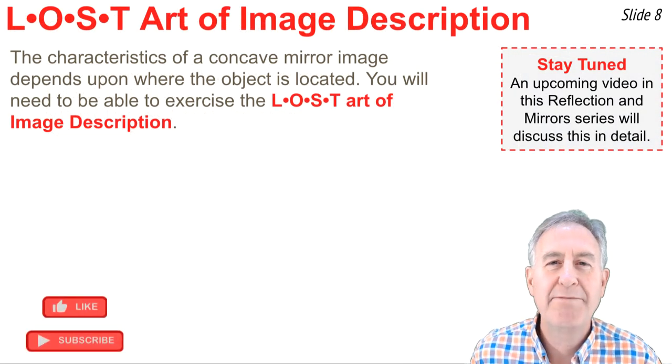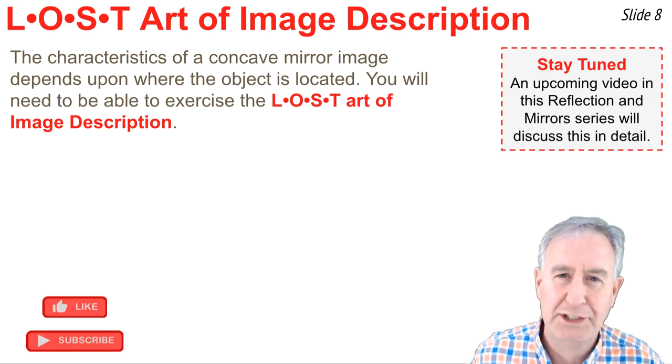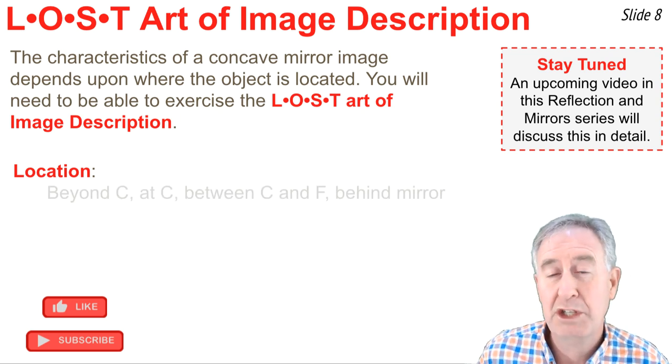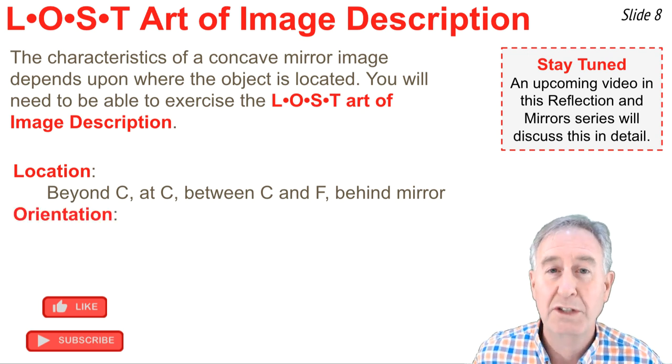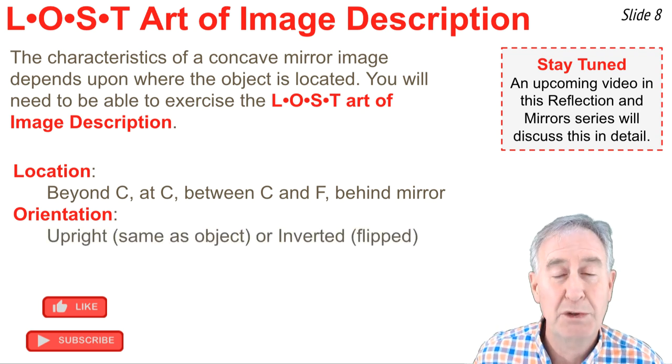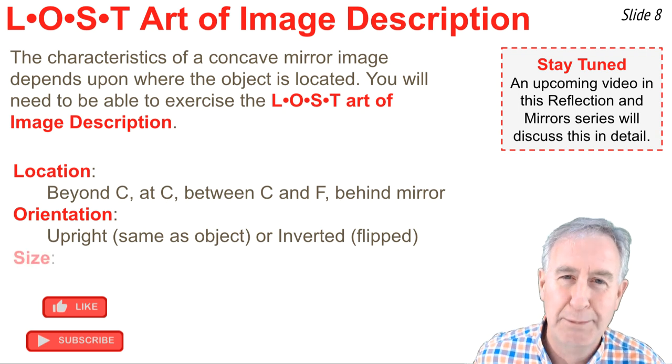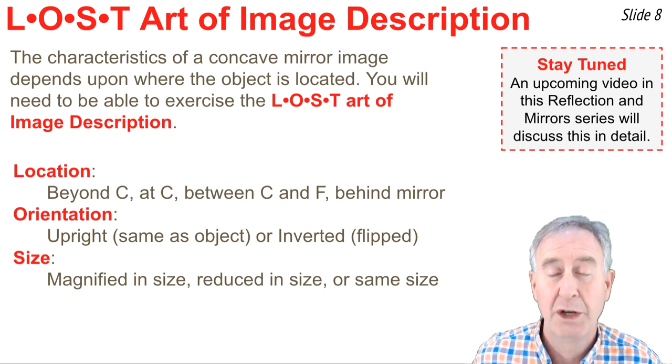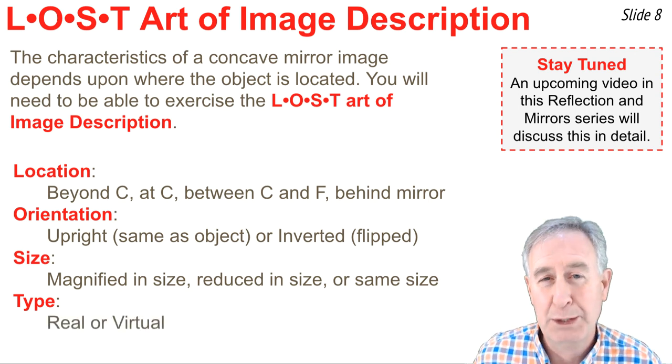The characteristics of a concave mirror image depend upon where the object is located. You will likely have to learn how to describe the characteristics of an image for your physics class. The mnemonic LOST is a useful means of remembering how to do it. The L of LOST stands for location. You would describe the location of the image relative to points along the principal axis, like the center of curvature, the focal point, and the mirror. The O of LOST stands for orientation. If the image is flipped upside down, you describe it as being inverted. If the object's right side up and the image is right side up as well, then you describe the image as being upright. S stands for size. You describe the size of the image as being magnified, that is larger than that of the object, or reduced, smaller than the object, or the same size as the object. The T of LOST is what we've been talking about. It describes the type of image as either being a real or a virtual type image.